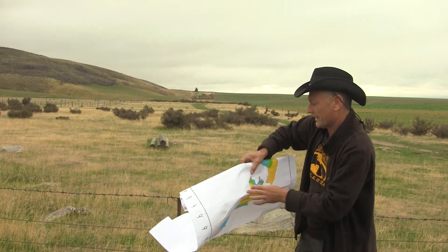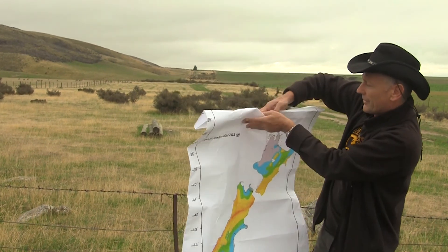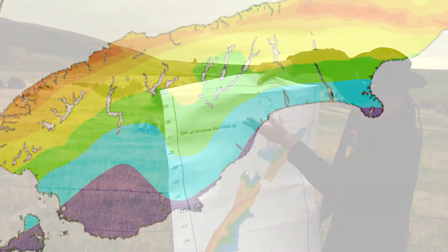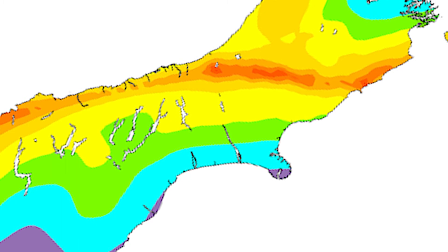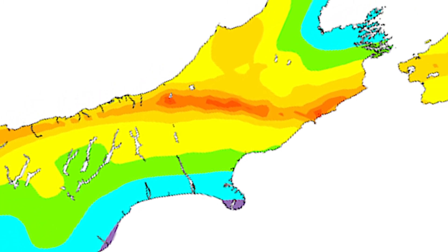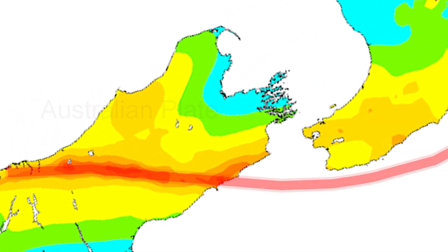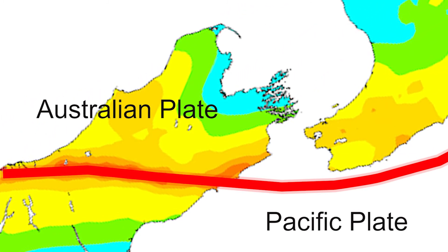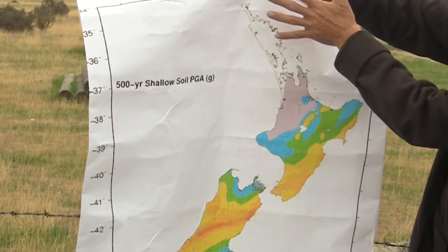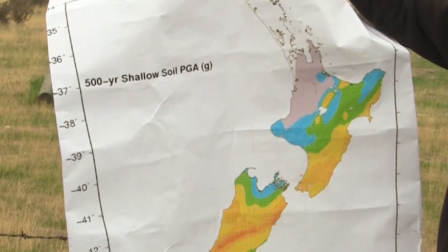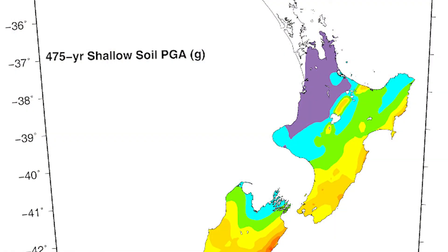Here is a map of New Zealand's earthquake hazard. The warmer colours are the areas of higher hazard — it's the main zone of the plate boundary — and the colder colours going away from there are areas of lower hazard.